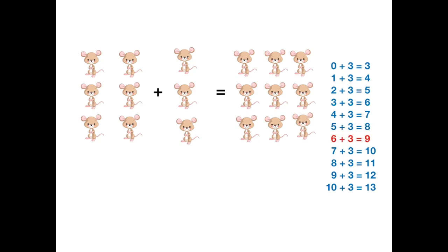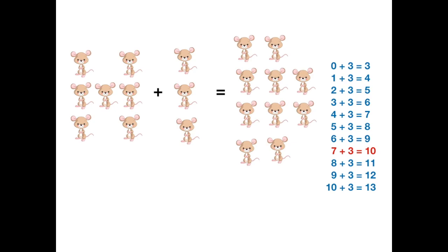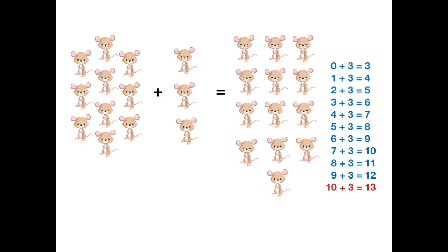Adding 3 to a number. 7 plus 3 equals 10. 8 plus 3 equals 11. 9 plus 3 equals 12. 10 plus 3 equals 13. And we are all done. Now that you know your addition table, can you sing with me?